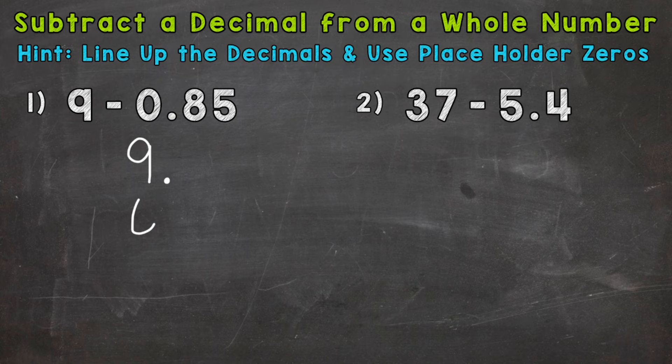So now let's line up the 85 hundredths there, lining up our decimals. We can put our equal sign and subtraction sign. So lining up the decimals there will line up all of the places for us. Now that may look a little offset, but we can use placeholder zeros.